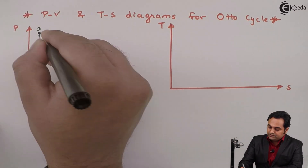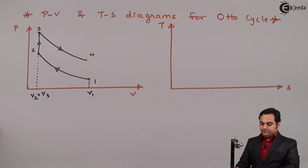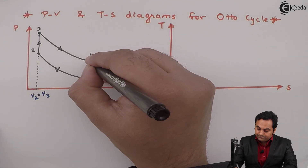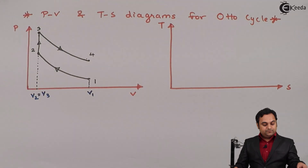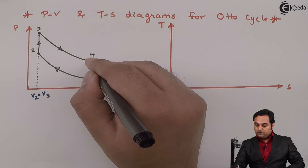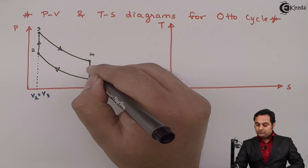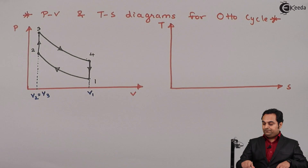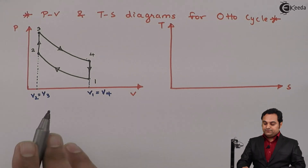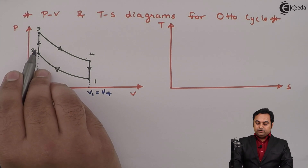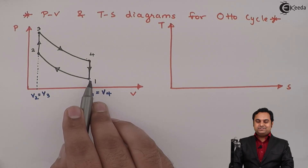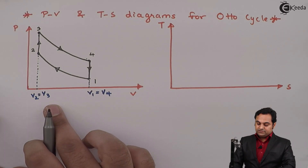From point 3 to point 4, this is reversible isentropic expansion. At point 3 the volume was less; at point 4 the volume is greater. After the expansion process, there is constant volume heat rejection from 4 to 1, keeping the volume constant, so V1 equals V4. To summarize: process 1 to 2 is isentropic compression, 2 to 3 is constant volume heat addition, 3 to 4 is isentropic expansion, and 4 to 1 is constant volume heat rejection.